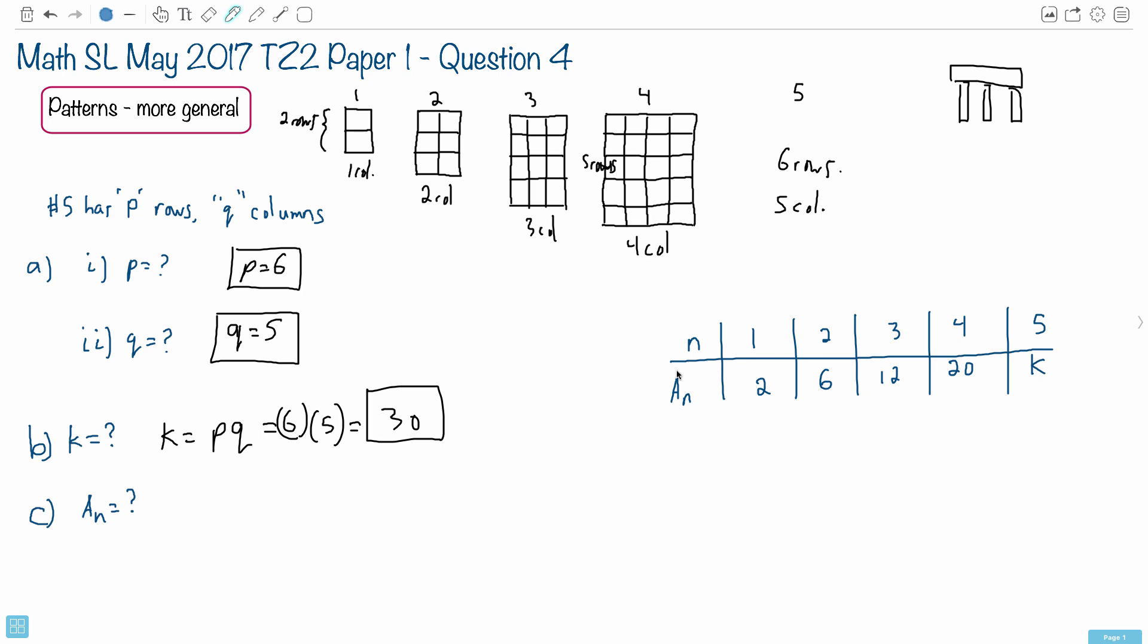Now think about how we determine the area. In general, remember what we just talked about before here, the area is going to be a_n is going to be the number of rows times the number of columns. If that makes any sense, right? The number of rows times the number of columns tells us the area.